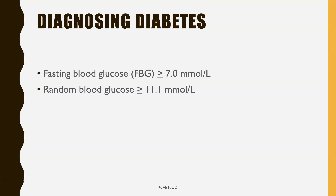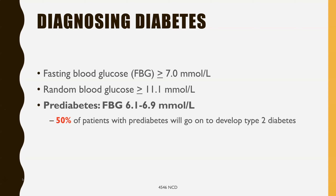When diagnosing diabetes: a fasting blood glucose above 7 mmol/L should trigger you to consider whether a patient is diabetic. A random blood glucose above 11.1 mmol/L should do the same. Importantly, a pre-diabetic state has been identified, defined as a fasting blood glucose between 6.1 and 6.9 mmol/L. Research has found that 50% of patients with pre-diabetes will go on to develop type 2 diabetes.